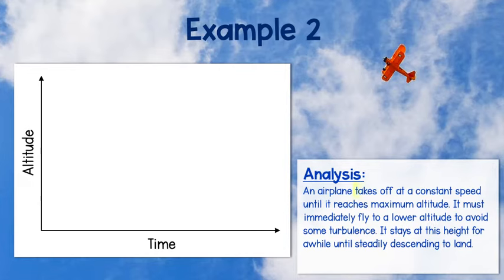Okay, we know that the airplane first takes off at a constant speed until it reaches maximum altitude. We can draw a line starting at time of zero that is increasing. There are no numbers, so just use your judgment as to where to stop.